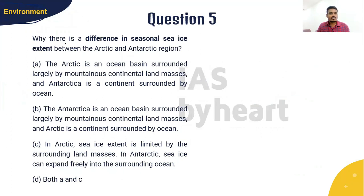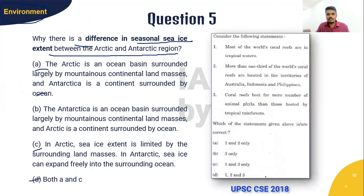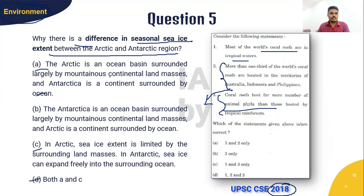Question 5 is from the environment topic: Why is there a difference in seasonal ice extent between the Arctic and Antarctic regions? There are four options: A) The Arctic is an ocean basin surrounded largely by mountainous continental land masses and Antarctica is a continent surrounded by ocean. B) Antarctica is an ocean basin surrounded largely by mountainous continental land masses and the Arctic is a continent surrounded by ocean. C) In Arctic, sea ice is limited by surrounding land masses. D) In Antarctic, sea ice can expand freely into the surrounding ocean. I will give you 10 seconds to solve this question.